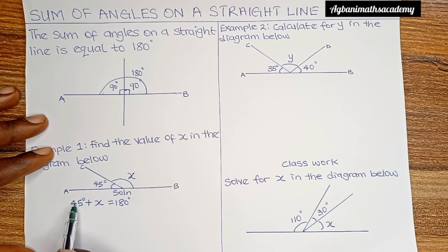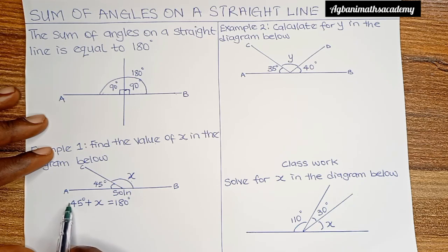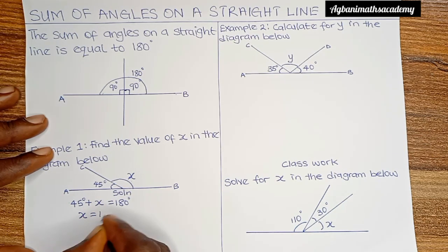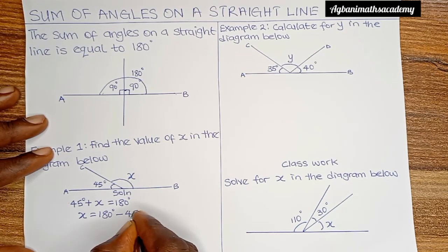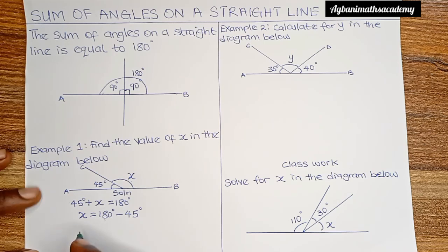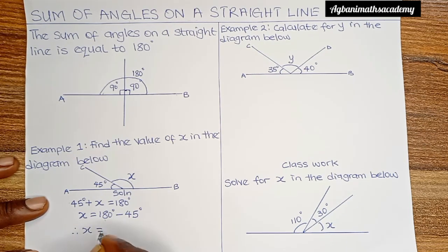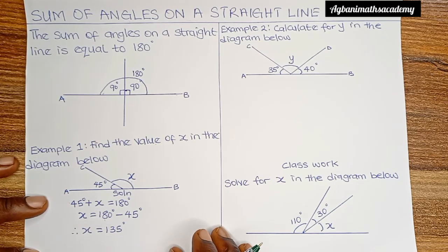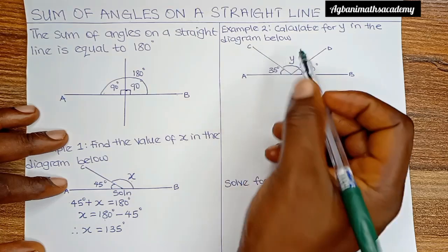To get the value of x, we move 45 degrees to the right. It has an invisible positive sign; when it crosses over to the right, it changes from positive to negative. So x is equal to 180 degrees minus 45 degrees. Subtracting gives us: therefore x is equal to 135 degrees. This is the answer to this first question.